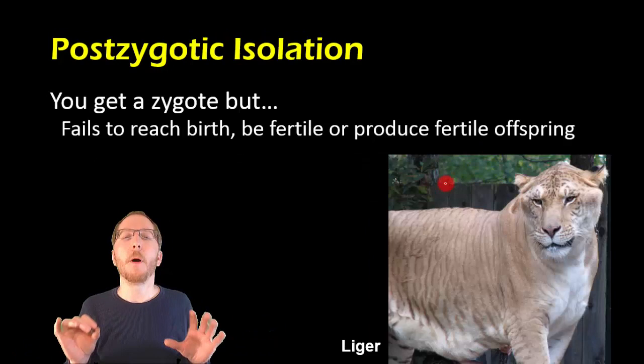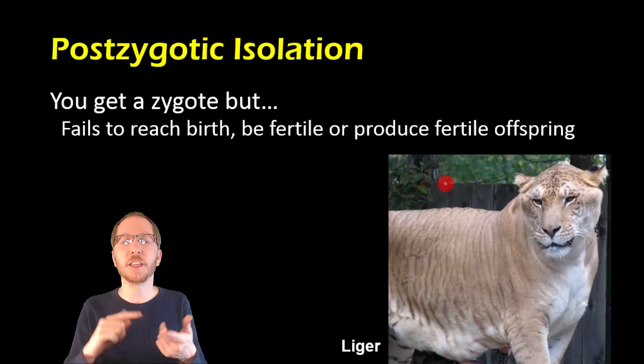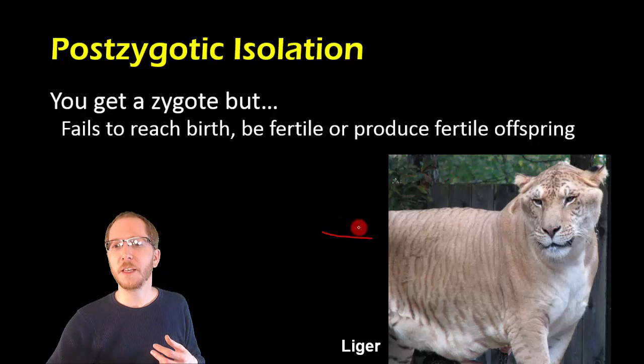Now, postzygotically, you can get a pregnancy. You can get the zygote. But either the resulting pregnancy terminates before it finishes, so essentially the fetus or the baby does not make it through to birth. That can happen in some cases. In other cases, you have fertility issues. So this is like a mule, or you'll see with a liger that we see on the picture here.